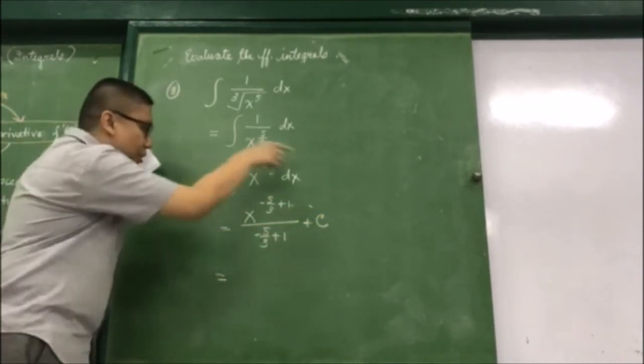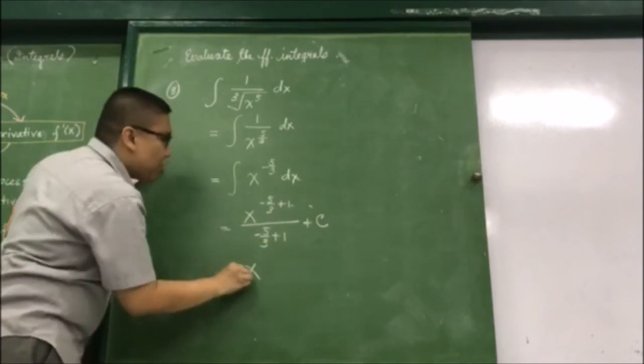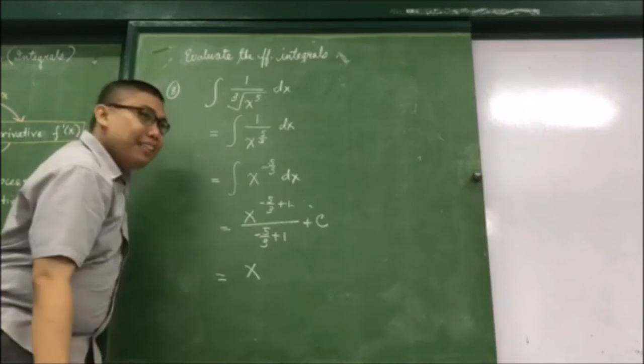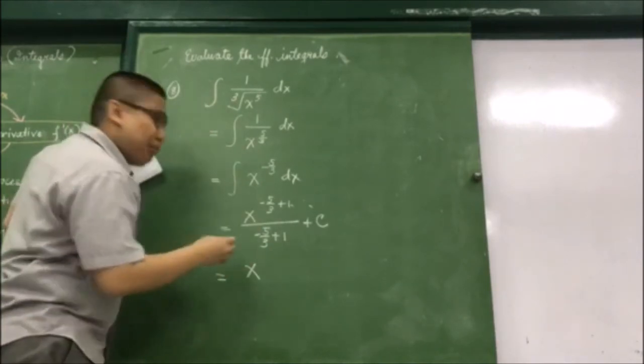Let us evaluate this. This becomes x raised to what is negative 5 thirds plus 1. We have negative 5 thirds.